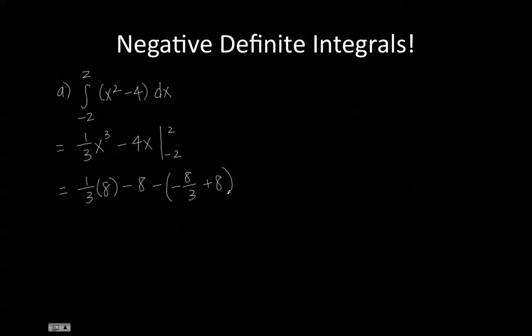And then 8 thirds minus 8 plus 8 thirds minus 8, so 16 thirds minus 16, negative 48 plus that is negative 32 thirds.